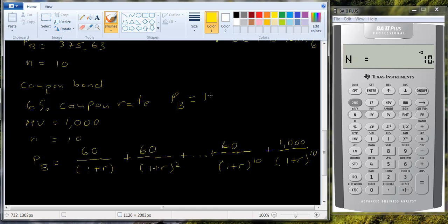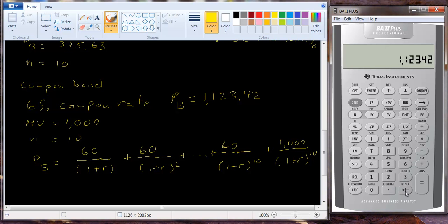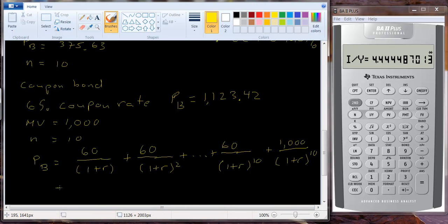Let me give you a price of a bond. The price of the bond we'll say is $1,123.42. Again, as I've said many times, the present value and the future value have to have different signs. So I'm going to put this in as a negative. In fact, because you're buying the bond, think of it that way. So it's money that you're spending. The payment is $60. And the future value is $1,000 or the maturity value. And we simply compute the interest rate and we get 4.44%.